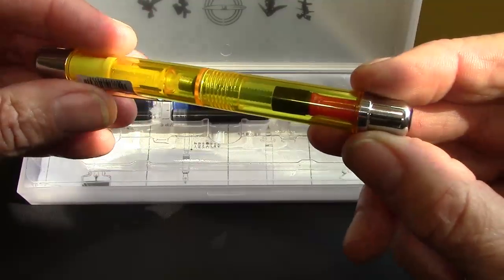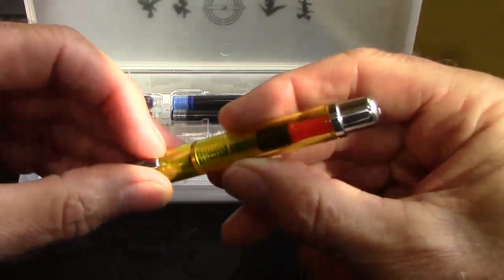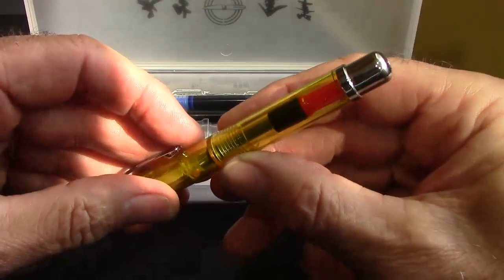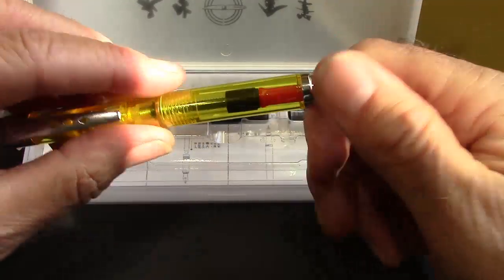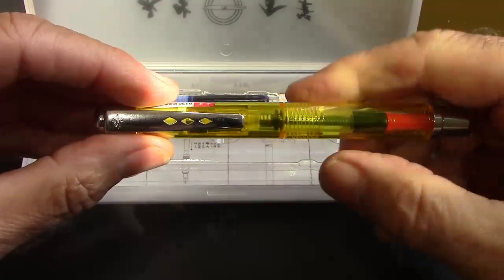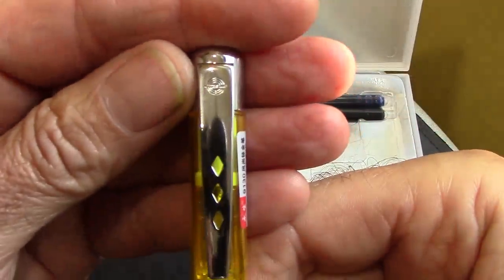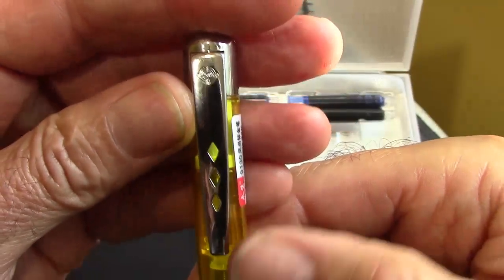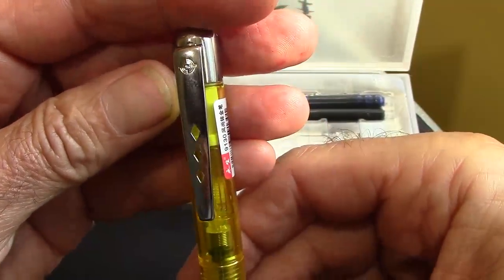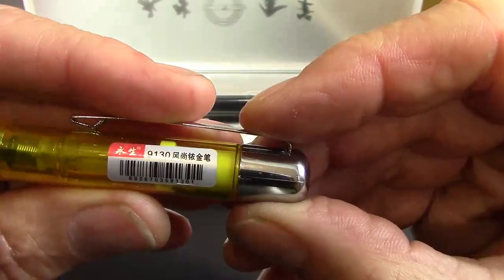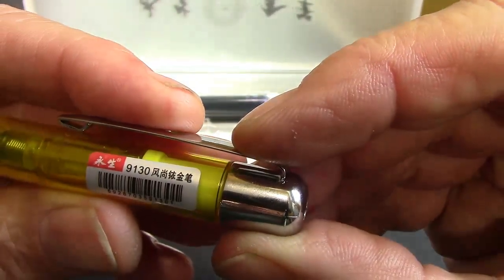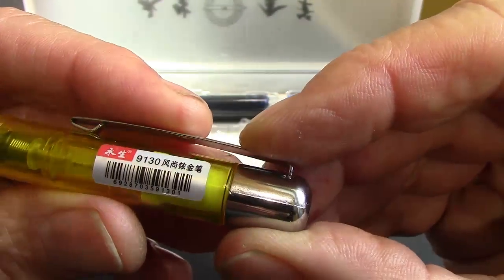It is definitely yellow, there's no question about it. It kind of looks like a Lamy converter in there with the little red turn knob. Interesting clip. We have that Wing Sung logo. The three openings are just an interesting graphic. We have your retail sticker on here showing the model number, 9130.